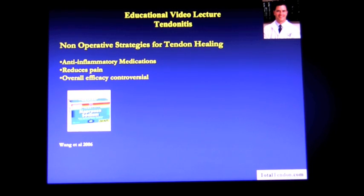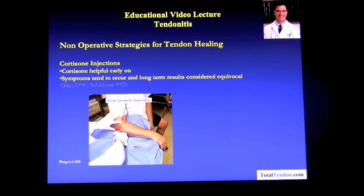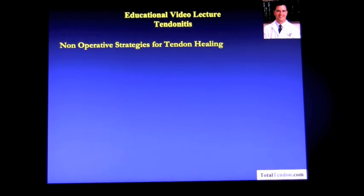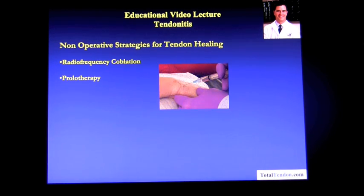Anti-inflammatory medications are very commonly prescribed, but the overall efficacy is controversial. Cortisone injections, especially for tennis elbow, are very common, and they do help early on, but symptoms tend to recur and long-term results must be considered equivocal. Radiofrequency co-ablation, prolotherapy, nitroglycerin patches, and even Botox have also been tried with varying efficacy as well.